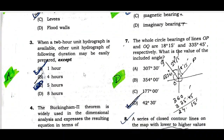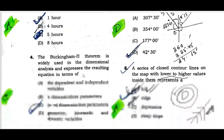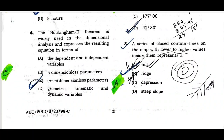Question number three: When a two-hour unit hydrograph is available, which unit hydrograph of the following duration may be easily prepared? Option A is correct — one hour. Question number four: The Buckingham Pi Theorem is widely used in dimensional analysis and expresses the resulting equation in terms of n minus m dimensionless parameters. Option B is the correct one.